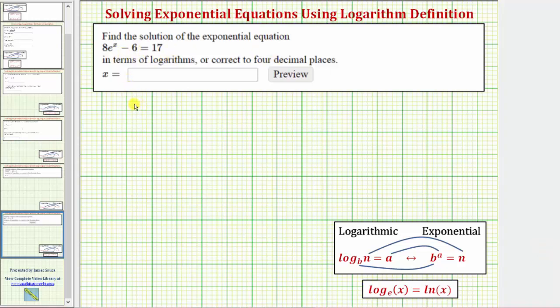We want to solve the exponential equation 8e^(x-6) = 17. The first step is to isolate the exponential part of the equation, which means you want to isolate e raised to the power of x. So let's first add six to both sides of the equation.